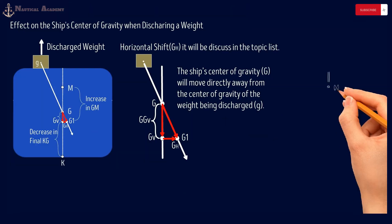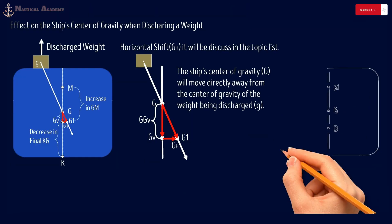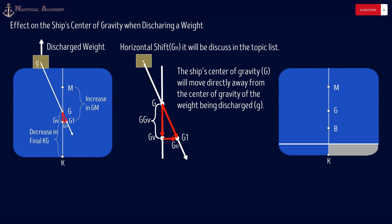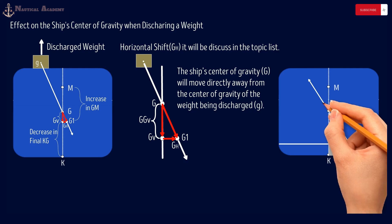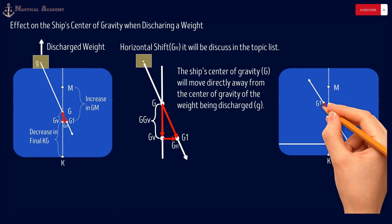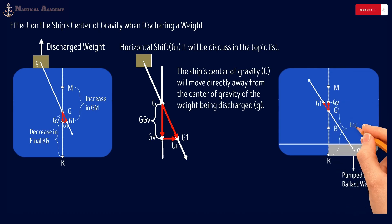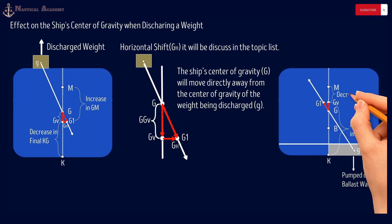The next scenario is pumping out or discharging ballast water from the double bottom tank. The tank's center of gravity is here when full of water, marked as small g. After pumping out the ballast, the ship's center of gravity will move away from the weight being discharged. The new G is marked as G1, and the vertical shift of G to GV is marked accordingly. The effect will be an increase in KG and a decrease in initial metacentric height GM.